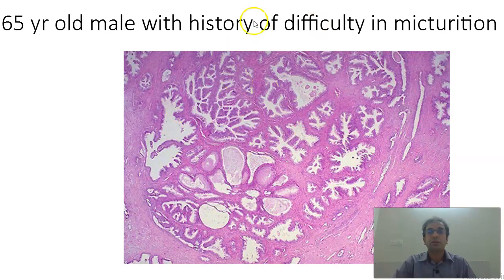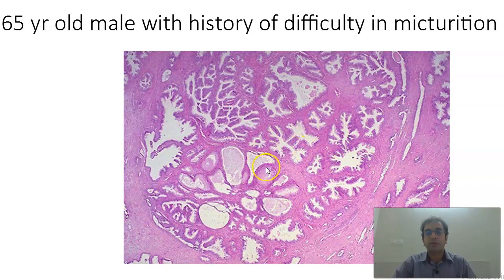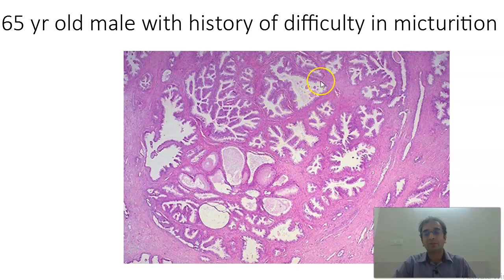Next case is that of a 65-year-old male with a history of difficulty in micturition. What you find here is enlargement of the prostatic tissue — hyperplasia of the glands with the stroma. If you were able to see in the microscope, they will have a dual layer of epithelial cells and basal cells. Basal cells will also be present. This becomes adenofibromyomatous hyperplasia of the prostate, i.e., BPH.